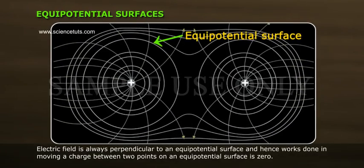Electric field is always perpendicular to an equipotential surface and hence work done in moving a charge between two points on an equipotential surface is zero.